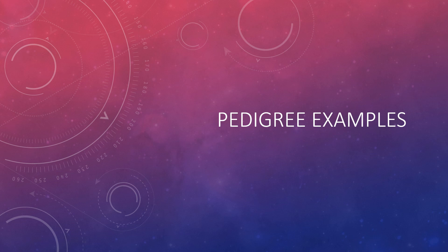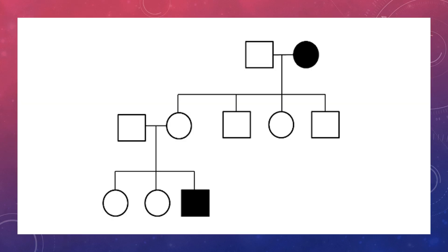In this video, we're going to look at how we can solve pedigrees. A pedigree is basically a picture of a family tree. When you look at pedigrees, any time you see a square, a square is a male. Any time you see a circle, a circle is a female. When you have a line between them, that represents a marriage or a mating. And when you have a line coming down, that lets you know that there is a child.